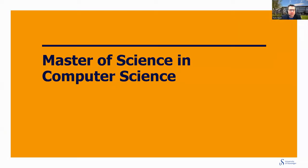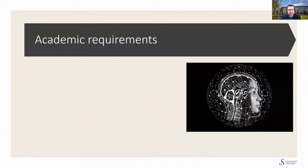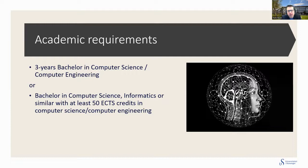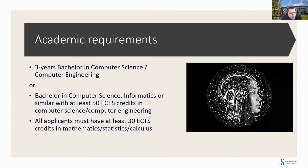Let's start with the first one: the Master of Science in Computer Science. To enter this study program, we have some requirements for admission. You need to have a three-year Bachelor in Computer Science or Computer Engineering. Or it's possible to have a Bachelor in Computer Science, Informatics or similar, with at least 50 ECTS credits in Computer Science or Computer Engineering. All applicants must have at least 30 ECTS in Mathematics, Statistics and Calculus.